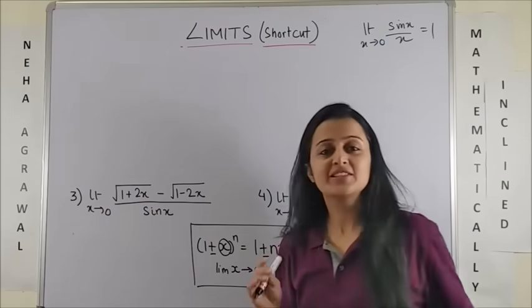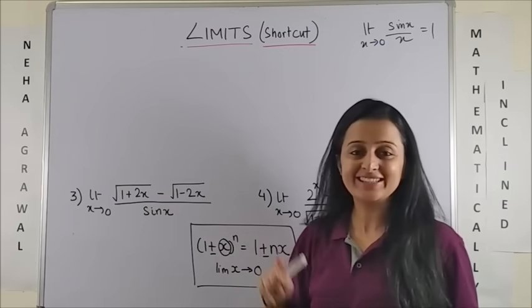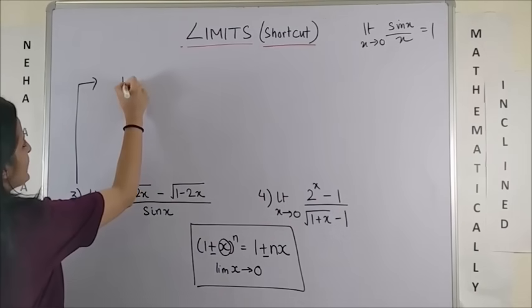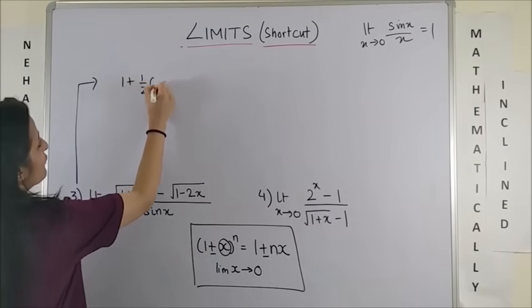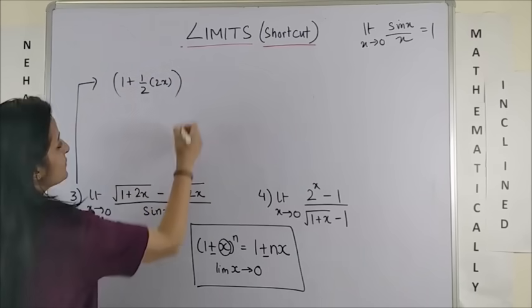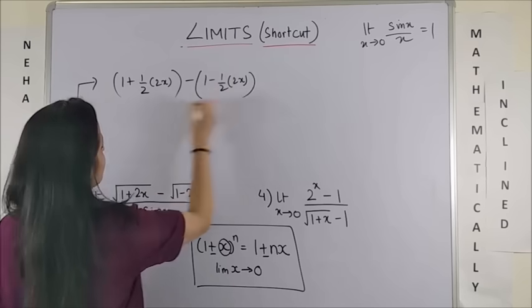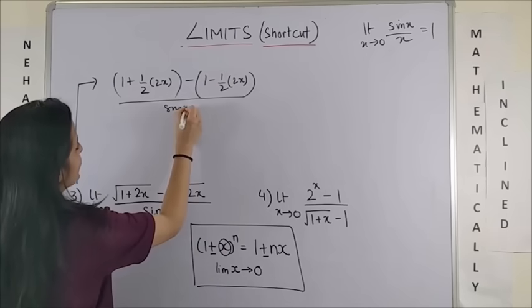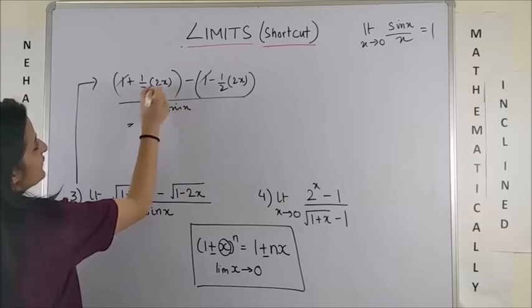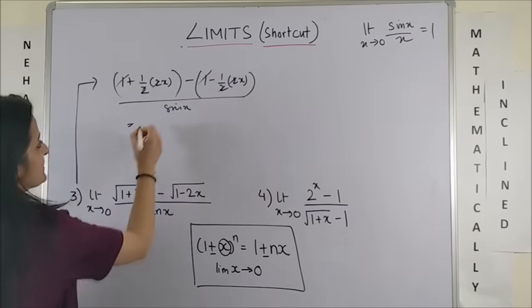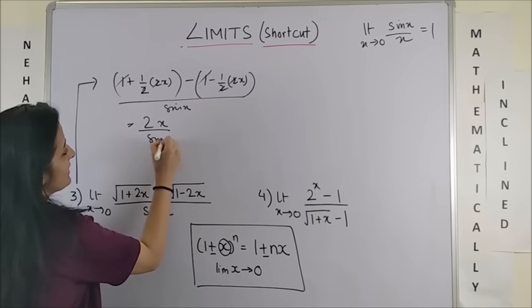Going ahead with the same logic, look at the third question. Again, I can write this as 1 plus half of 2x and this would also be minus 1 minus half of 2x upon sin x. Now, once get cancelled, we are left with these 2's get cancelled and we are left with x plus x that is 2x upon sin x.